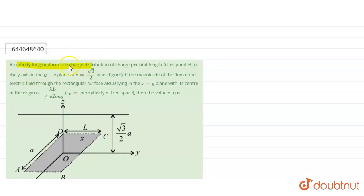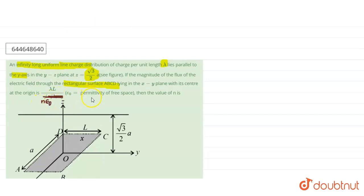An infinitely long uniform line charge distribution with charge per unit length lambda lies parallel to the y-axis in the y-z plane at z equal to root 3 by 2a. The magnitude of electric flux through the rectangular surface ABCD lying in the x-y plane with its center at the origin is given by lambda L divided by n epsilon 0. We are asked to find the value of n.